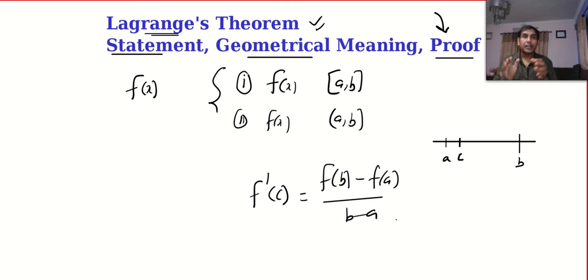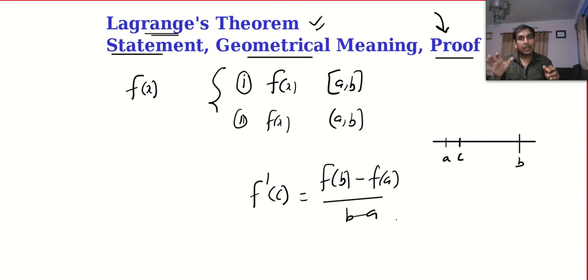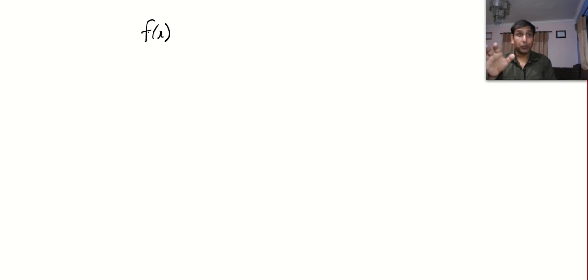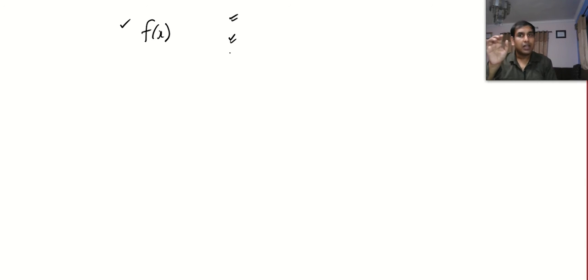Rolle's theorem came up with the idea of having a tangent parallel to the x-axis, and Lagrange extended or generalized Rolle's theorem. If we add one more condition — f(a) equal to f(b) — this becomes Rolle's theorem. So: let f(x) be a function which is continuous, and second, differentiable, meaning you can find the slope of the tangent at each and every point, and there is no third condition.